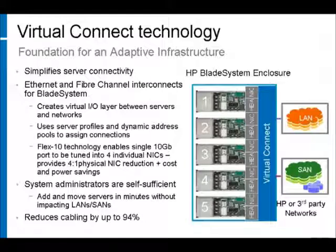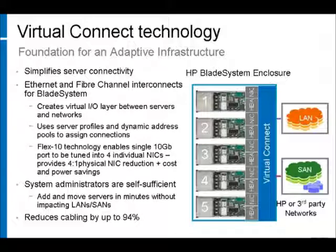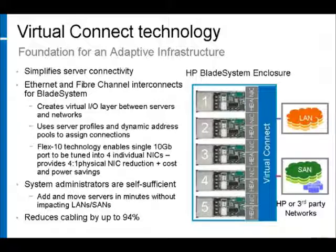Because server connections are assigned to enclosure bays and not individual servers, the LAN and SAN connections remain constant and are no longer affected by changes to the server environment. HP VirtualConnect simplifies networks by reducing physical cabling by up to 94% without adding more switches to manage. It simplifies data center operations by cleanly separating server management from network management, enables system administrators to quickly move and replace servers within minutes without affecting production networks, and enables workload mobilization by simply assigning or reassigning a server profile.